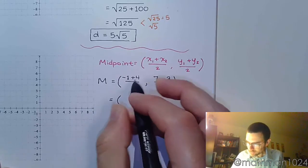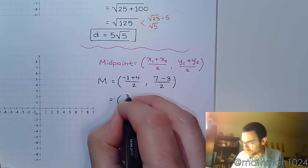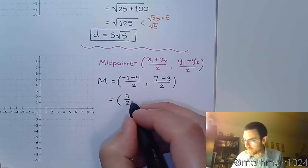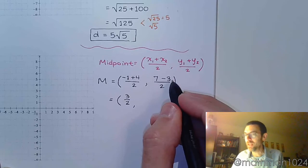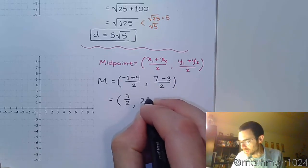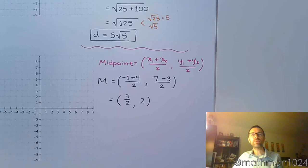So working this out, negative 1 plus 4 is 3, so we get 3 halves. 7 minus 3 is 4, and 4 divided by 2 is 2. So that's what we say the midpoint is. It's the ordered pair of 3 halves, 2.